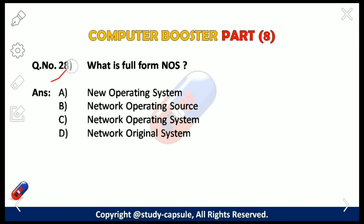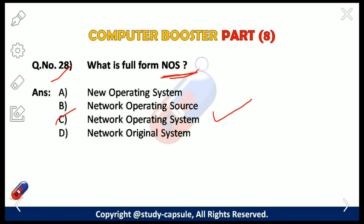Our 28th question: what is the full form of NOS? The answer is C — Network Operating System. A network operating system is a computer operating system designed primarily to support workstations, personal computers, and in some instances older terminals that are connected on a local area network (LAN).